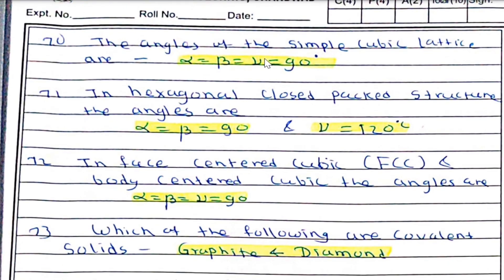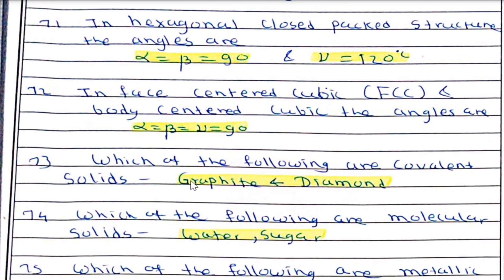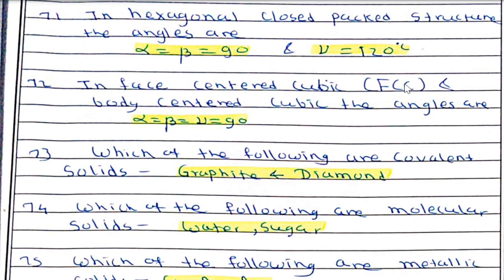The angles of a simple cubic lattice are alpha = beta = gamma = 90°. In hexagonal close-packed (HCP) structure, alpha = beta = 90° while gamma = 120°. In face-centered cubic (FCC) and body-centered cubic (BCC), the angles are alpha = beta = gamma = 90°.